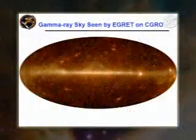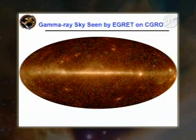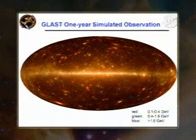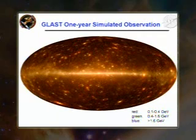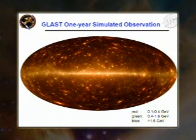So that brings us to GLAST. Here's the same sky map on a slightly different color scale for comparison — what EGRET gave us after nine years of its operation. And this is what we think GLAST is going to give us in just the first year of observation. This is the thing that has us so incredibly excited because we see that it has enormous discovery capability.